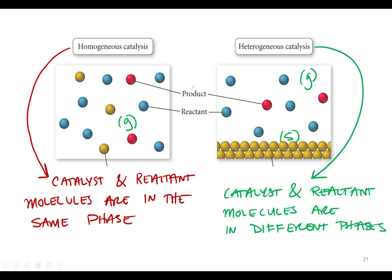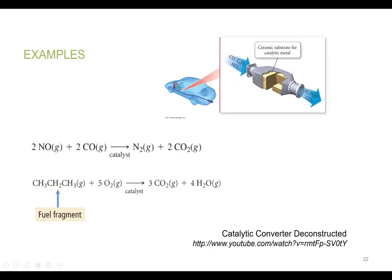The two examples for catalysis that we're going to talk about - the first one is a catalytic converter. In every car and automobile nowadays are catalytic converters. They use some type of catalyst to convert pollutants into much less harmful substances, like nitrogen monoxide and carbon monoxide.